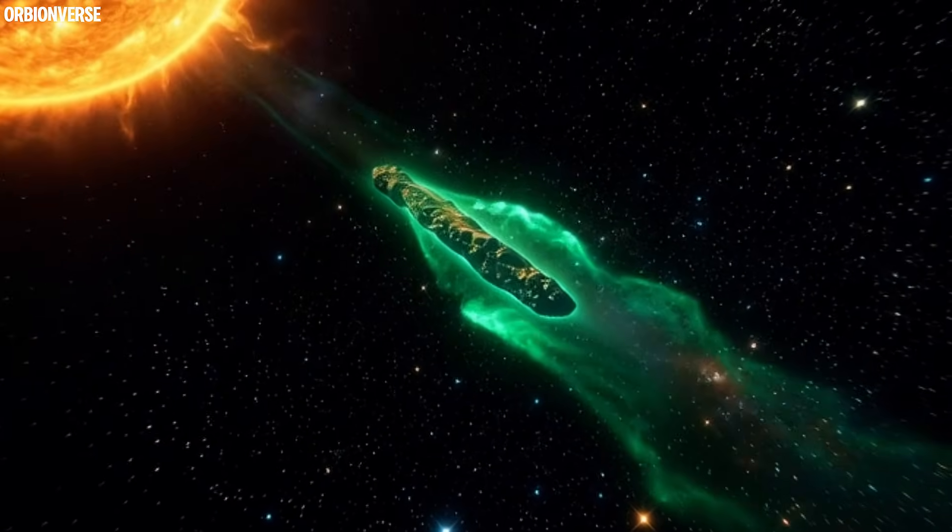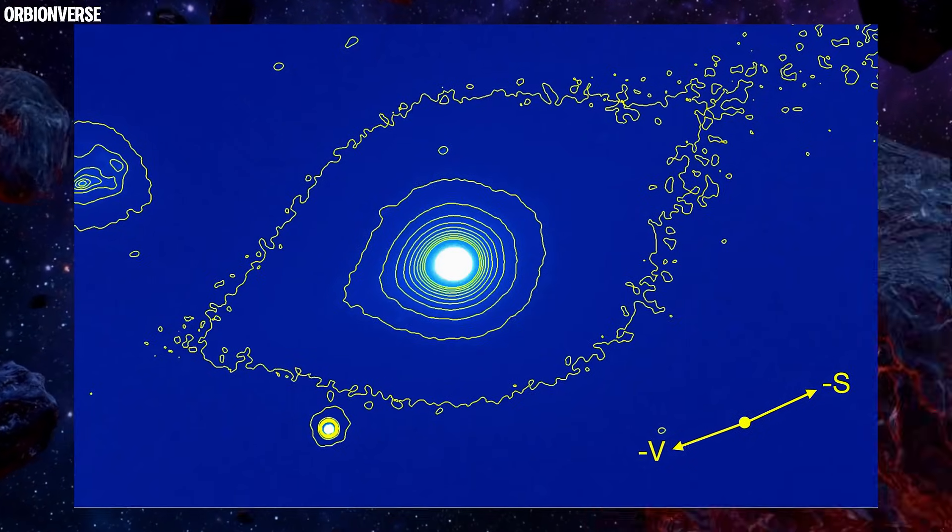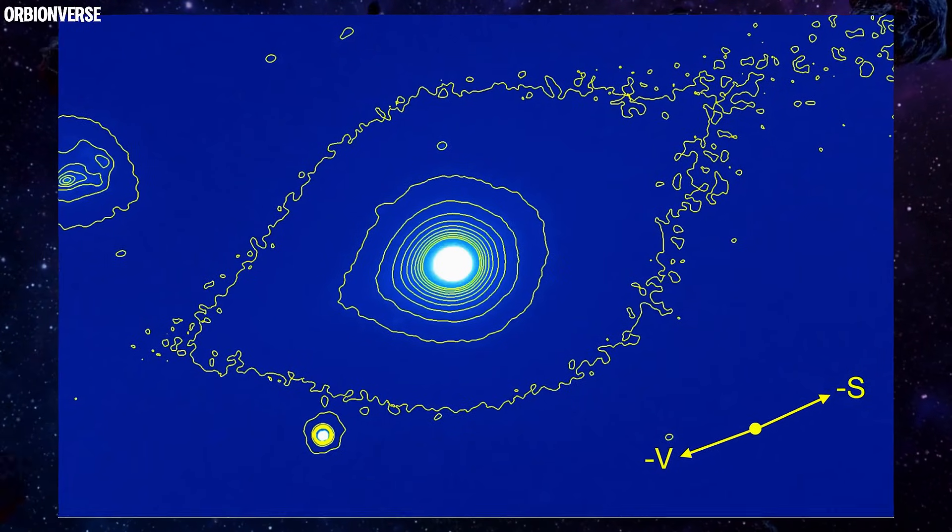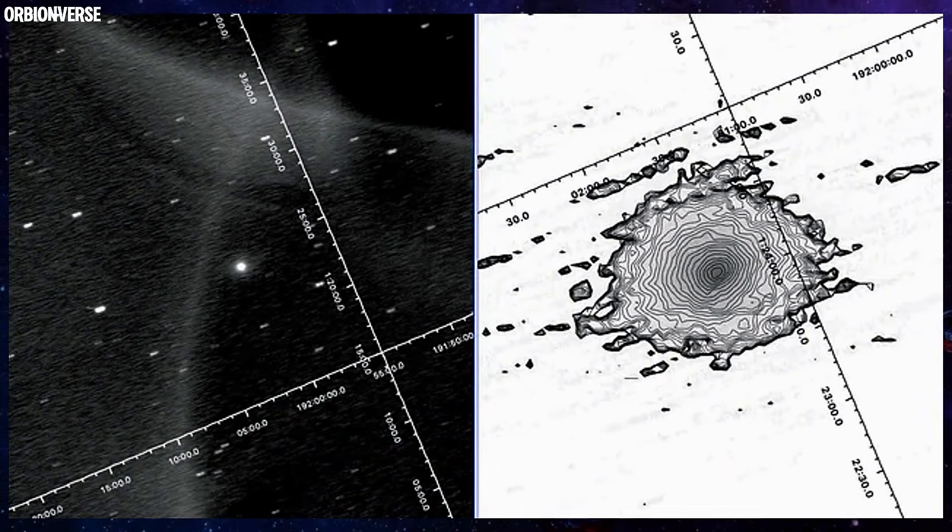But 3i Atlas? It's coming toward us almost without a tail at all. Just a glowing, expanding mass with a tight, bright core that refuses to reveal its true size.